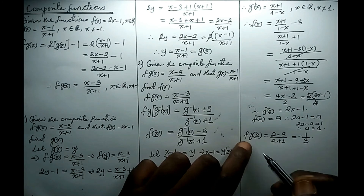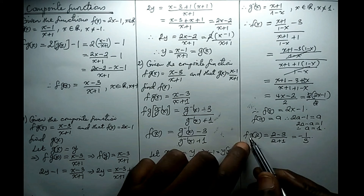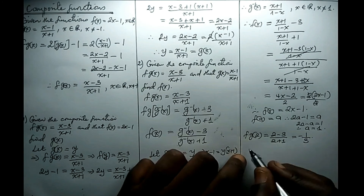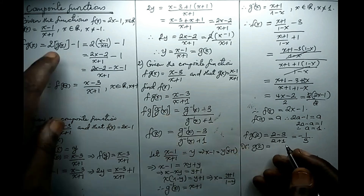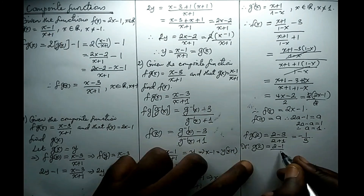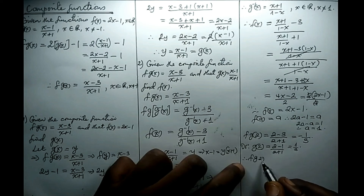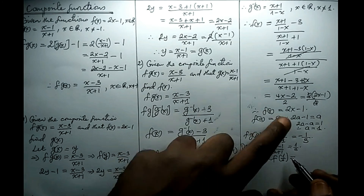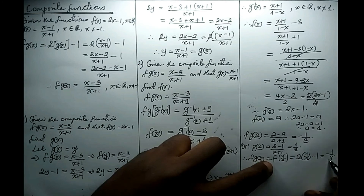It would depend on the situation. In some questions you do not need to find fg of x first before finding fg of a particular number. So here we start with g of 2 first: substituting 2 in g gives 2 minus 1 all over 2 plus 1, which is one third. So fg of 2 becomes f of one third. Substituting one third in f: 2 times one third minus 1, which is two thirds minus 1, gives negative one third — the same result as before.